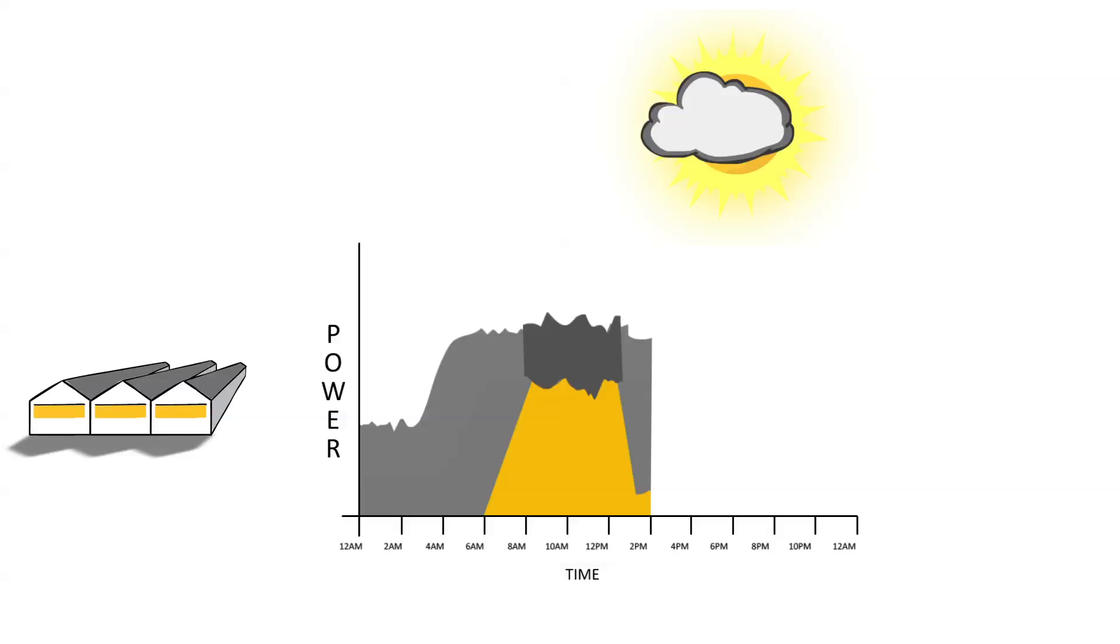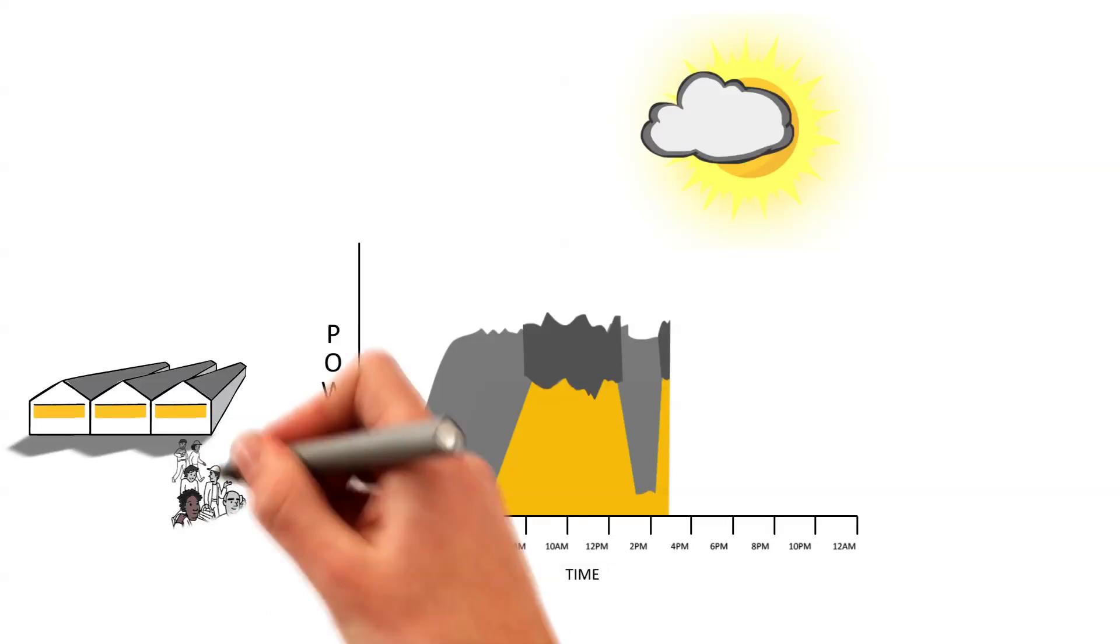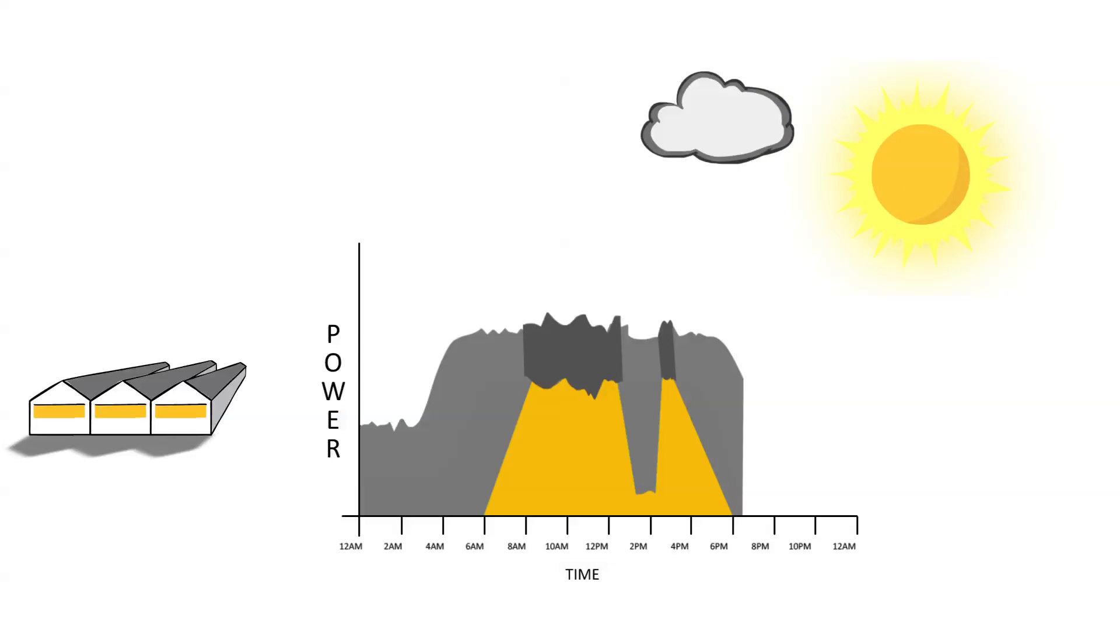And even if a cloud should pass in front of the sun, the solar controls will increase the output from the standby generator, ensuring a stable and consistent electrical supply to your business.